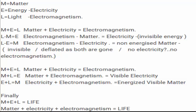Then we'll drop down to L minus M equals E. Electromagnetism minus matter equals electricity, which is invisible. So if you take away the matter, you no longer have electromagnetism either. All you are left with is energy, which does not have an electromagnetic spectrum because it's not running through matter.